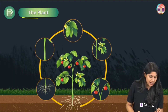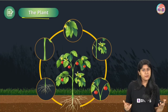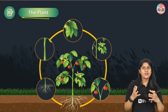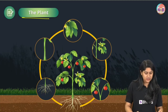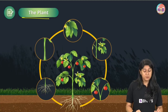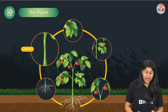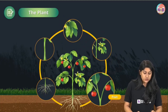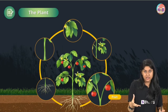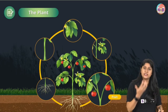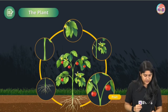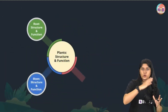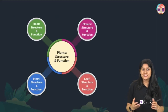Plants are really very important for all the living organisms on planet Earth. We'll be looking at the different parts of a plant — roots, stem, leaves, flowers, and fruits. We've broadly categorized this whole chapter into four subtopics to keep track of our learning and make it super easy.